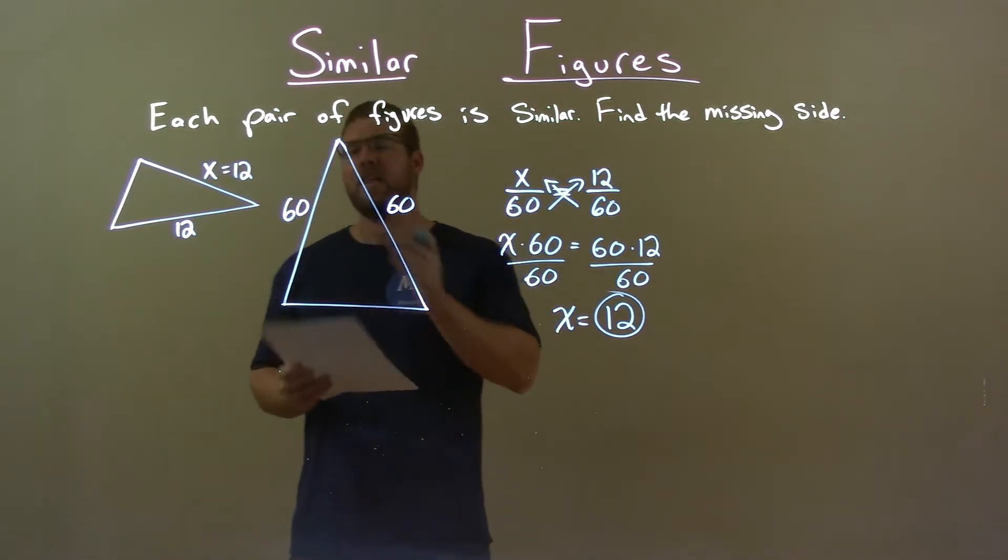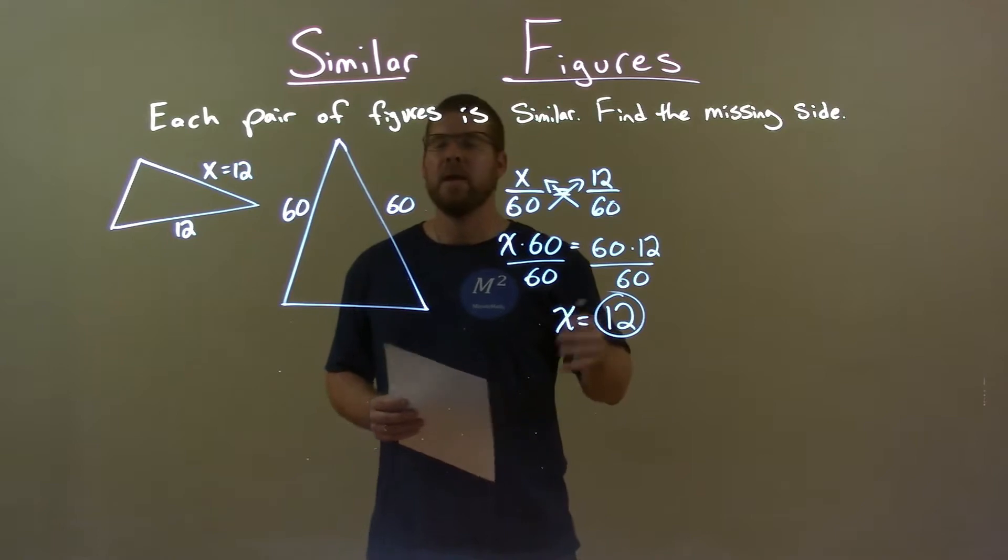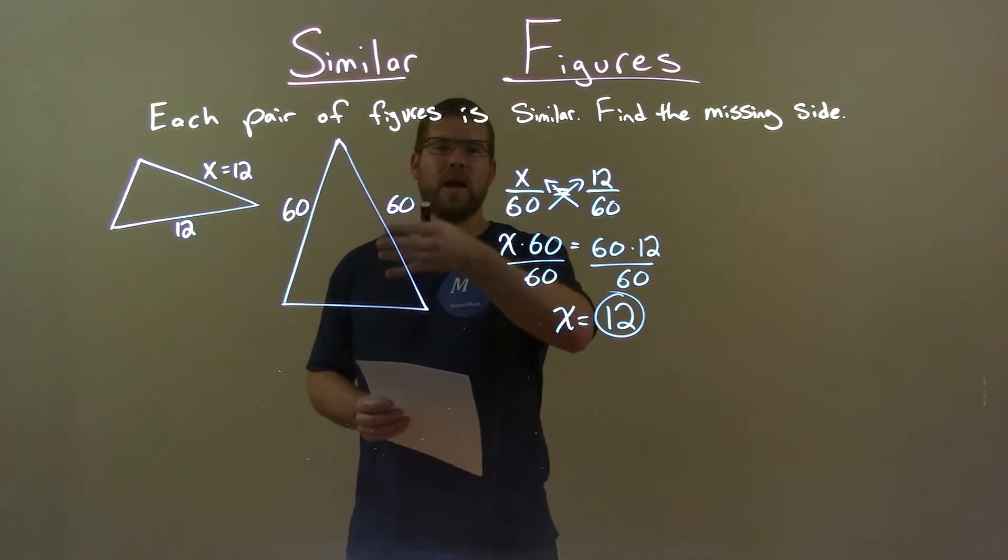Quick recap. We're given these two similar triangles, and we have to find the missing side. Well, we set up a proportion because two triangles that are similar have proportional